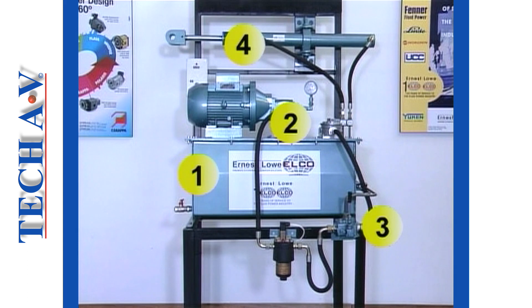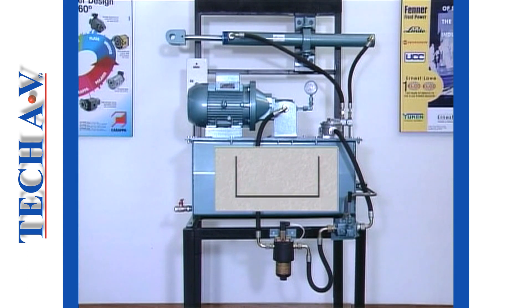Each of these components is represented symbolically in the following way. This is the tank symbol. It is basically a simple outline of a typical rectangular-shaped tank. This is the pump symbol. A pump is a rotating component. All rotating components are represented with a circle.